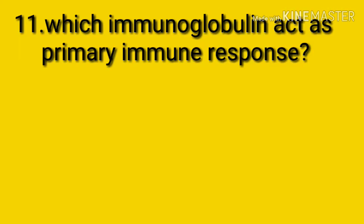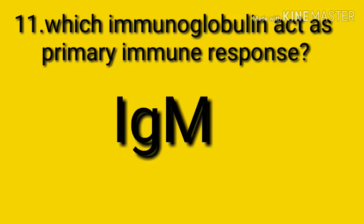Question number eleven: which immunoglobulin acts as the primary response? The answer is immunoglobulin M. Immunoglobulin M acts as the primary immune response. IgM is the first antibody to appear in response to the initial exposure to an antigen.